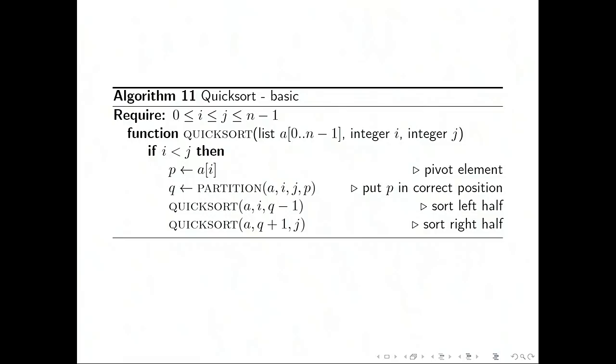Here's some pseudocode for quicksort, basic version. You have the input list. You have i less than or equal to j. Those are indices. As long as we have a non-trivial sublist to sort, so i is less than j, then we pick the pivot element.